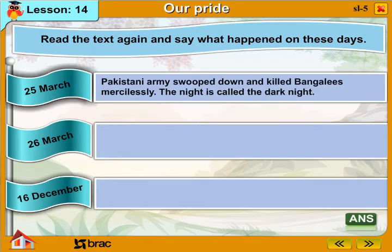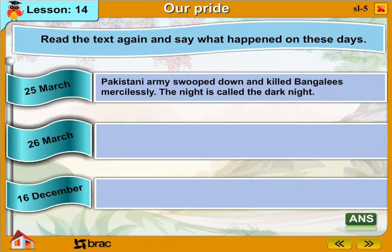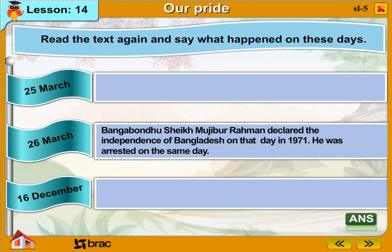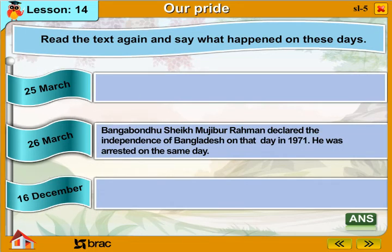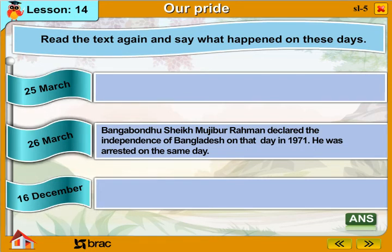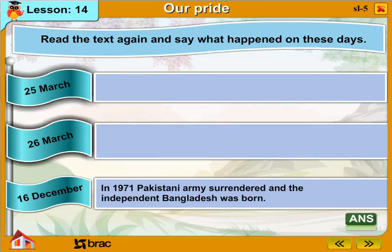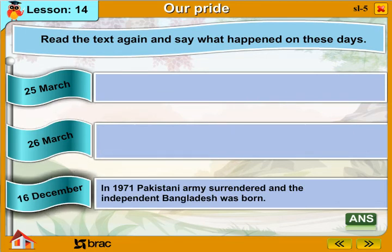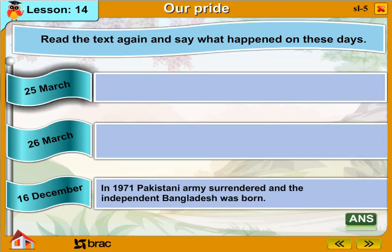25th March: The Pakistani army swooped down and killed Bengalis mercilessly. The night is called the dark night. 26th March: Bangabandhu Sheikh Mujibur Rahman declared the independence of Bangladesh on that day in 1971. He was arrested on the same day. 16th December: In 1971, the Pakistani army surrendered and independent Bangladesh was born.